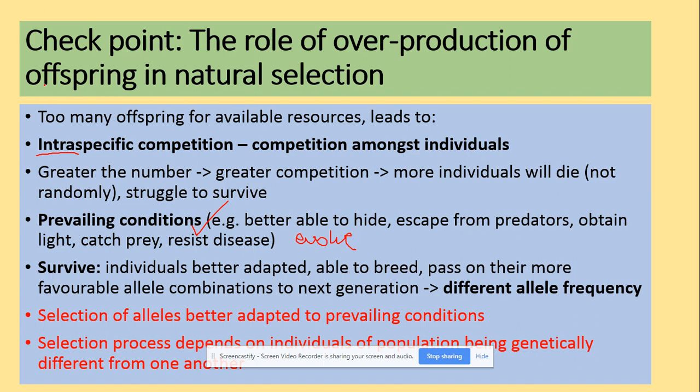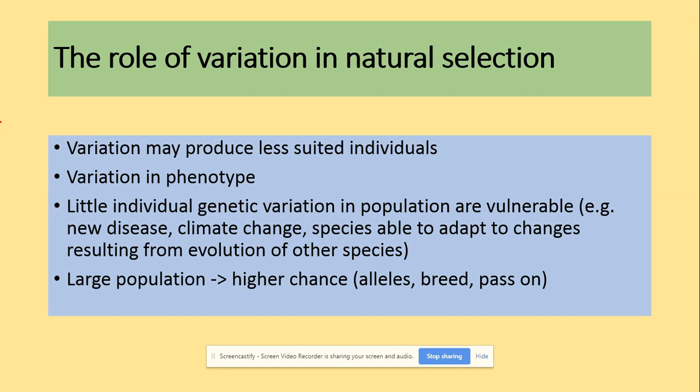The selection process depends on individuals within a population being genetically different from one another. The role of variation in natural selection is that variation may produce less fit individuals. Little individual genetic variation in a population is actually beneficial because it provides the ability to adapt to changes resulting from climate change or new diseases. A larger population has a higher chance of passing on advantageous alleles to future offspring.